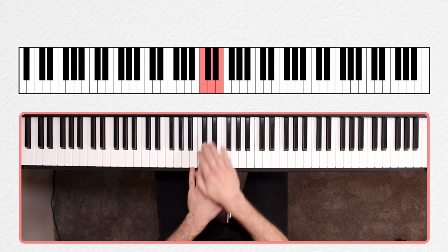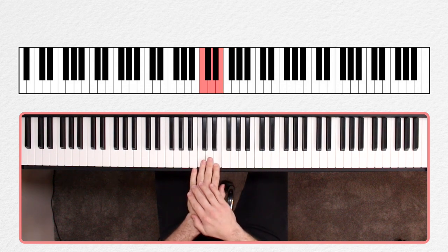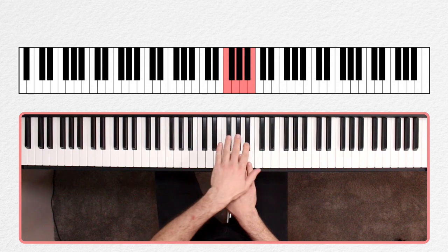So here are the three around the two black keys, and here are the four white keys around the three black keys.